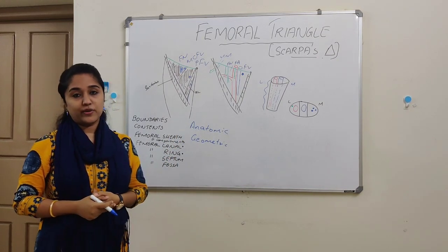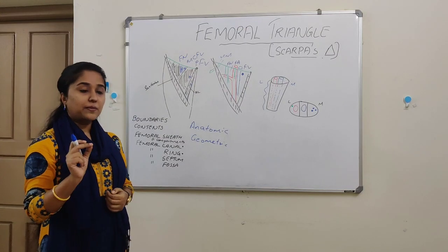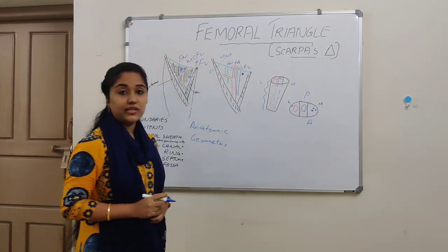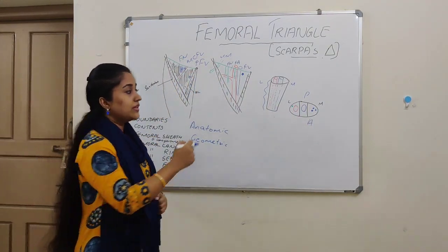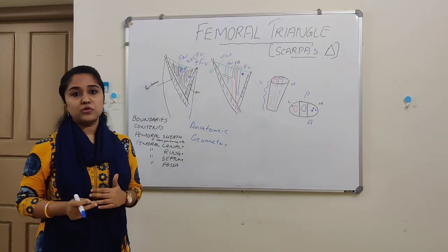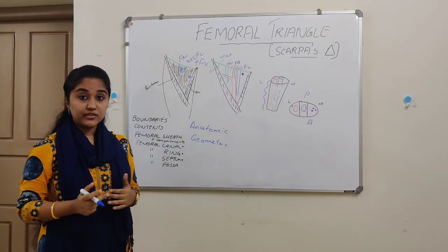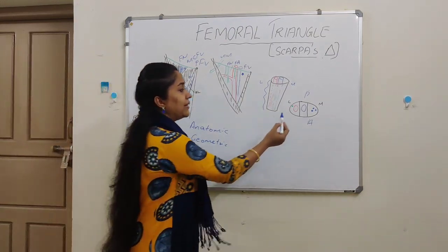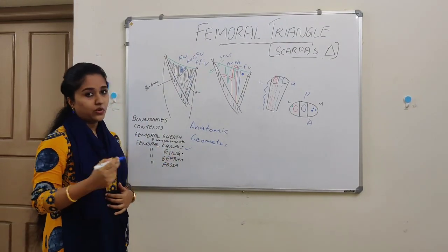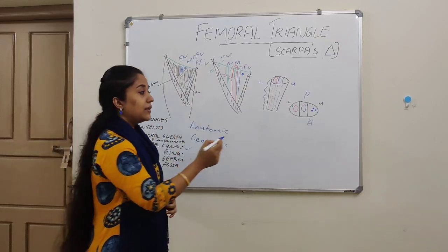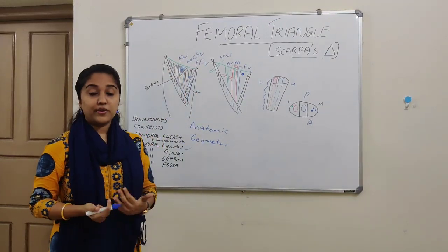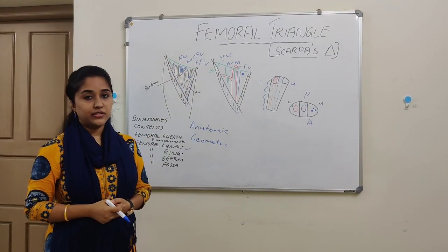The femoral nerve is not included in the femoral sheath. Two anteroposterior septa divide the femoral sheath into three compartments: the medial compartment, the intermediate compartment, and the lateral compartment. The medial-most compartment is an empty space referred to as the femoral canal. The intermediate compartment contains the femoral vein, whereas the lateral compartment contains the femoral artery and the femoral branch of the genitofemoral nerve.